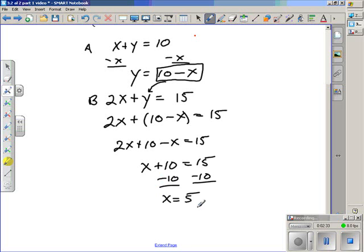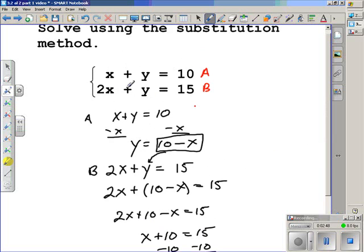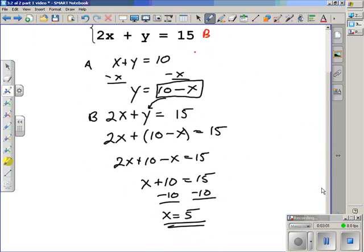Now remember, when solving a system of equations, if it does in fact have one unique solution, it's going to have an x-coordinate and a y-coordinate. Right now we know the x-coordinate, and we have to take this value, x = 5, and plug it into one of the original equations. It doesn't matter which one. It should give the same result either way. I like to look at them and see which one would be easier to substitute in and solve. Personally, I think equation A is the easiest.